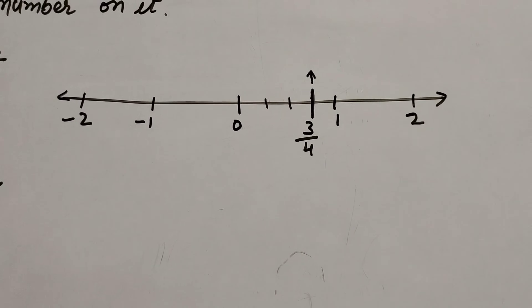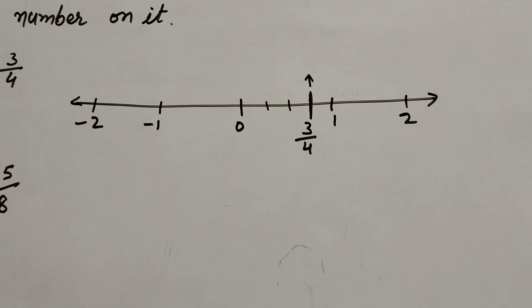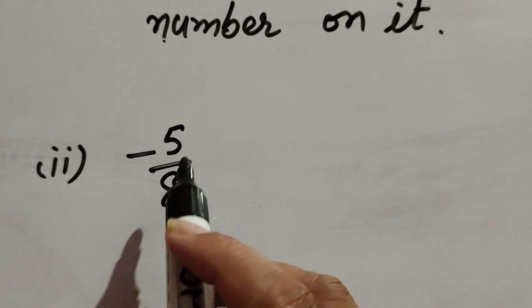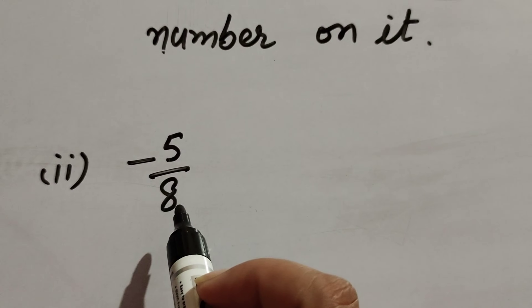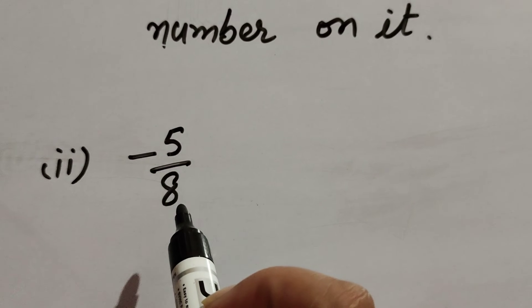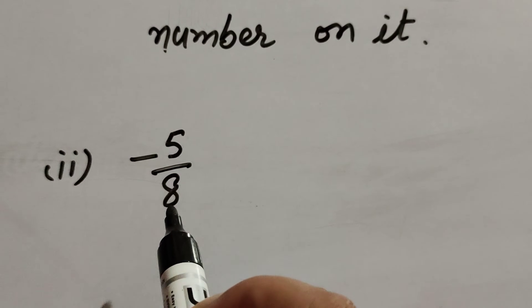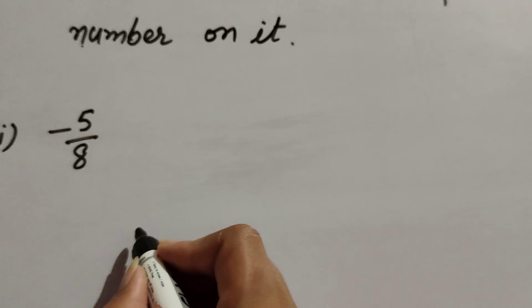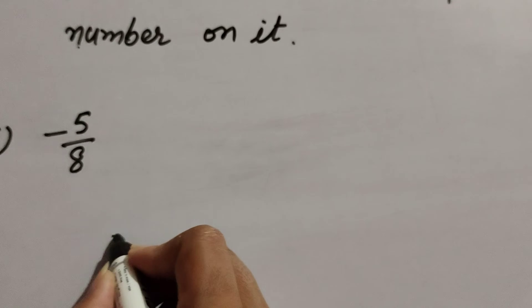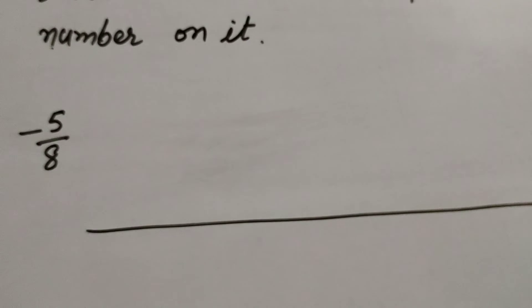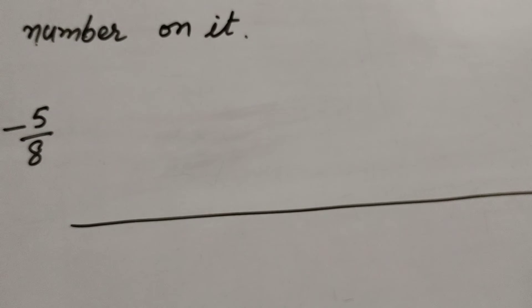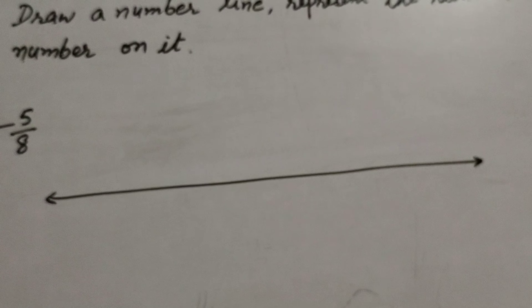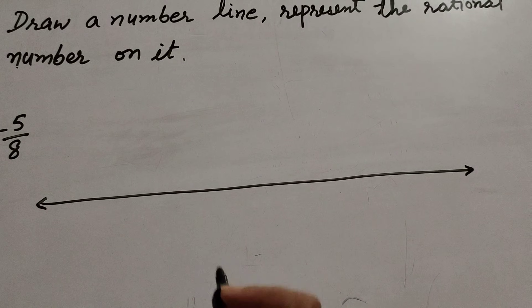In the second part we have the number minus five over eight. Minus five over eight is a rational number, so we represent this number on a number line. First we draw the line, then after drawing this line we divide it into equal parts.